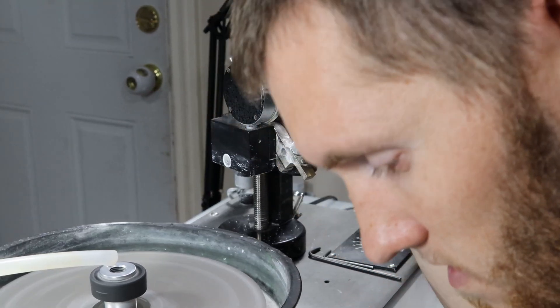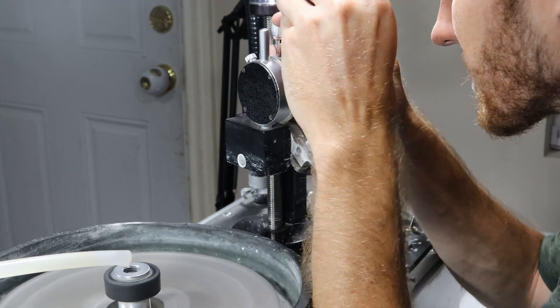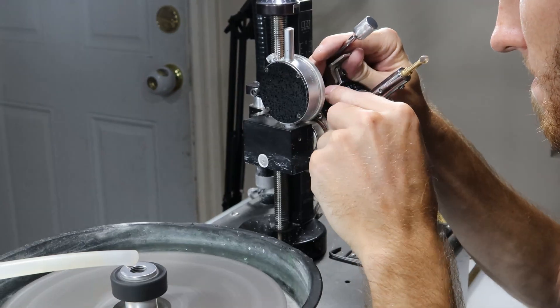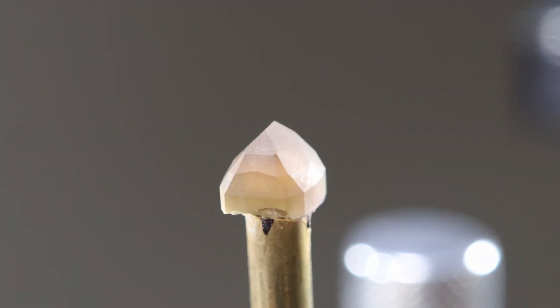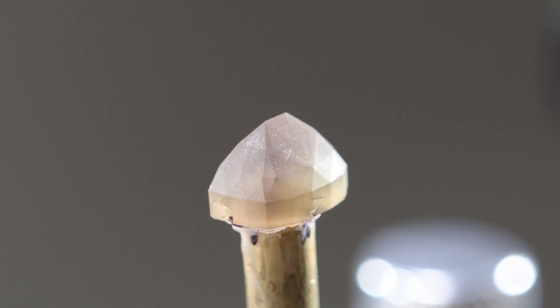Honestly I think I should have stopped after establishing the girdle outline and designed a cut on the computer based on the measurements of the stone. I would have liked that better than going full free form. Here it is with all of the pavilion facets cut in.